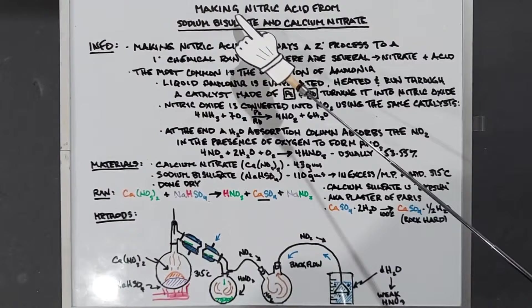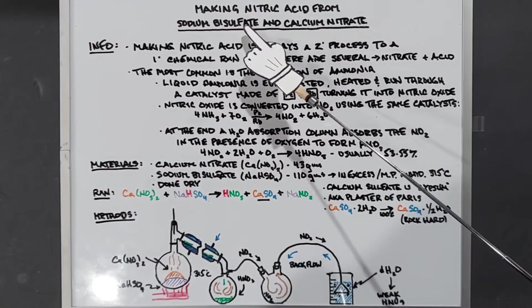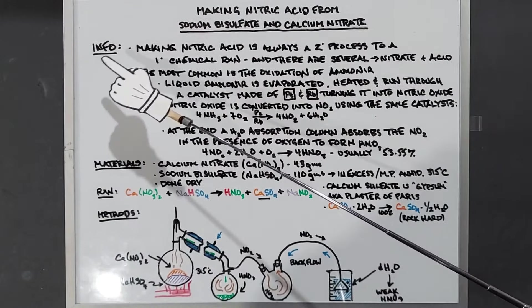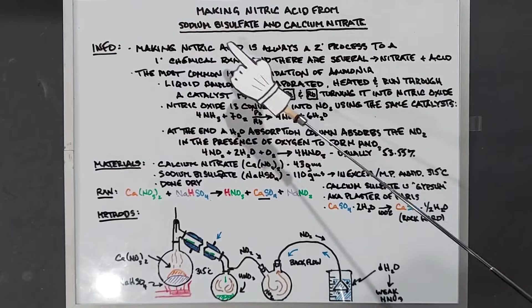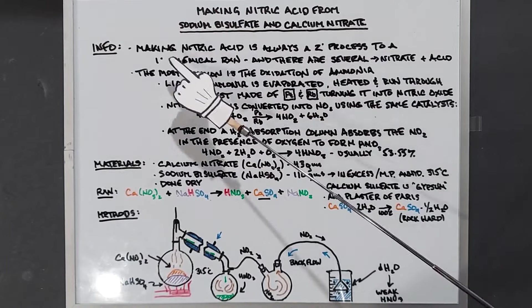In this video we're going to be making nitric acid using sodium bisulfate and calcium nitrate. Making nitric acid has always been a secondary process to a primary chemical reaction.